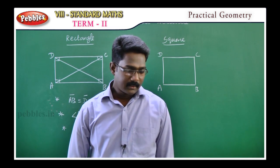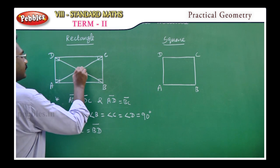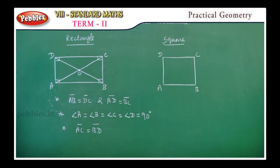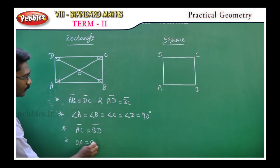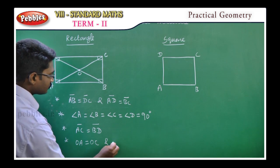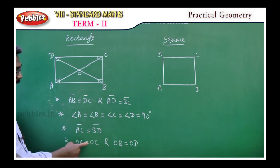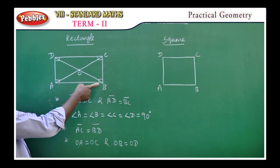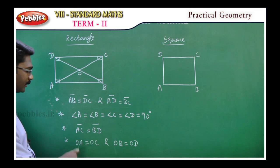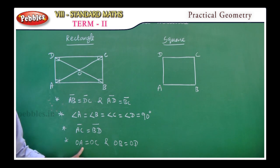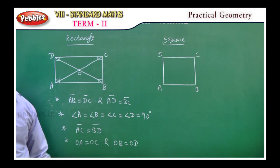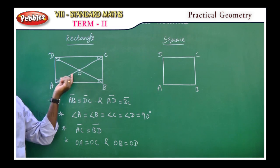Last property: in a rectangle, the diagonals bisect each other. At the intersection point O, OA equals OC and OB equals OD. So all four line segments OA, OB, OC, OD are equal — the diagonals bisect each other.